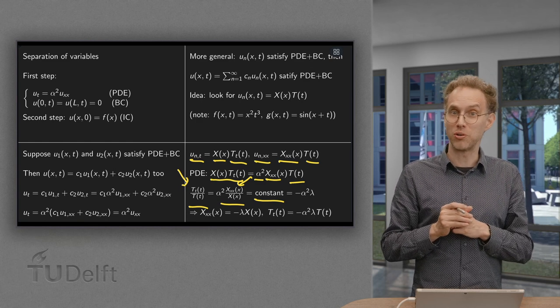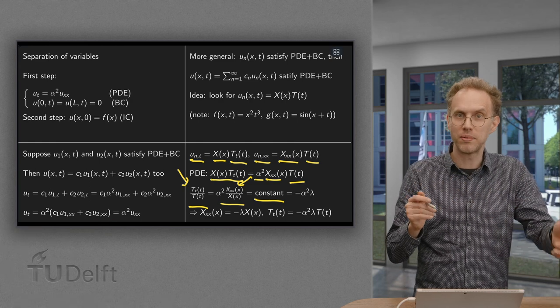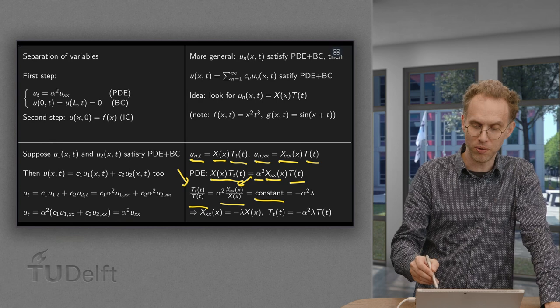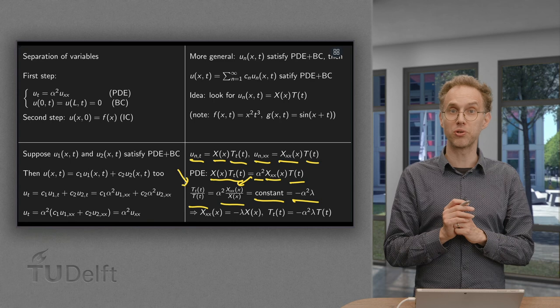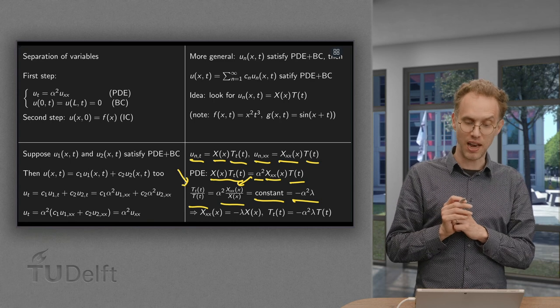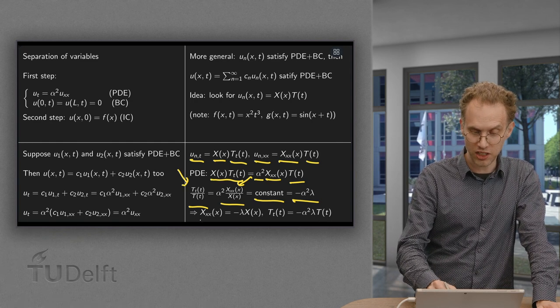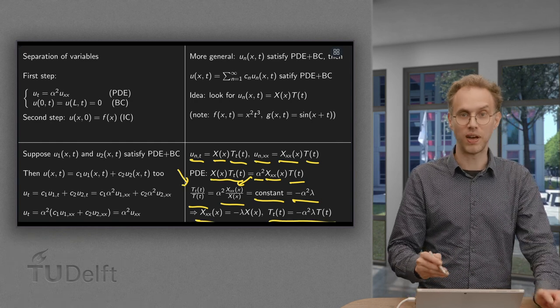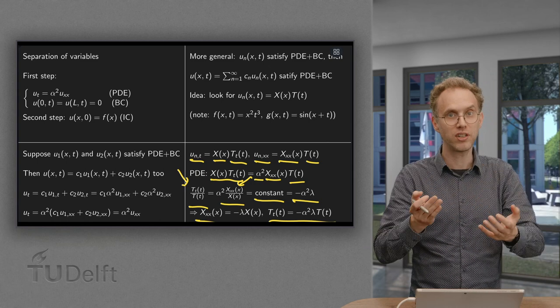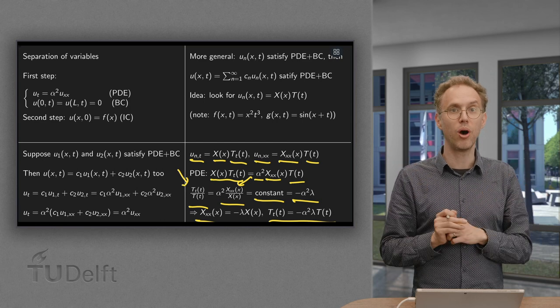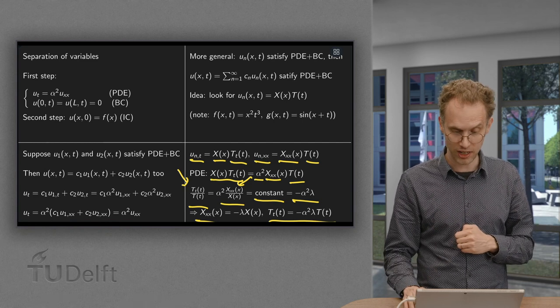Well, we have to give this constant a name and in this video we could call it lambda, but it's more convenient to include alpha squared in the constant and to include a minus sign. So we will call this constant minus alpha squared times lambda. Now if you use this, we end up with two ODEs: X66 equals minus lambda times X, and TT equals minus alpha squared times lambda times T. So we have converted our PDE into two ODEs. That's much nicer because we have many solution methods for ODEs.